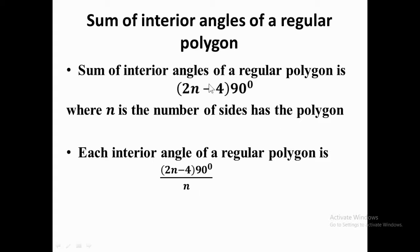For example, if the polygon is a triangle with n = 3: 6 − 4 = 2, times 90 = 180, then 180 ÷ 3 = 60. So each interior angle of an equilateral triangle is 60 degrees. Remember these two formulas: for the sum of interior angles use (2n − 4) × 90, and for each interior angle divide that result by n.